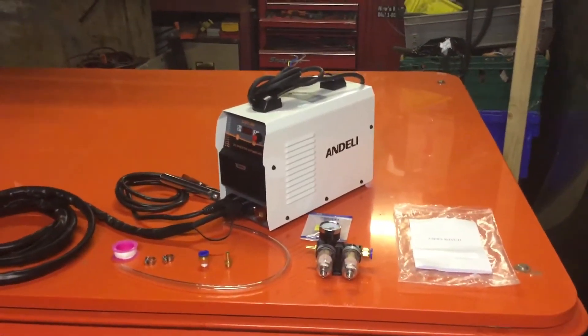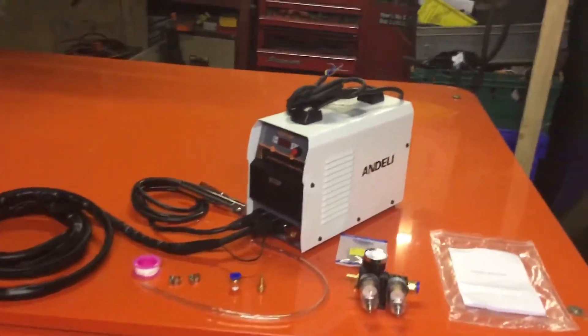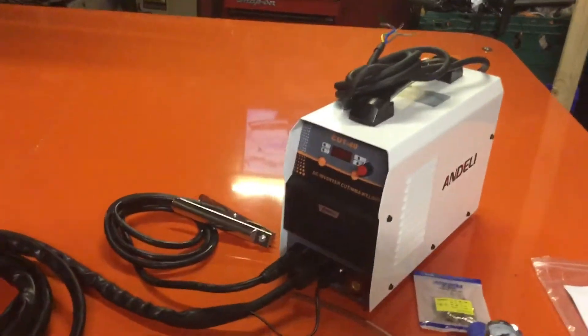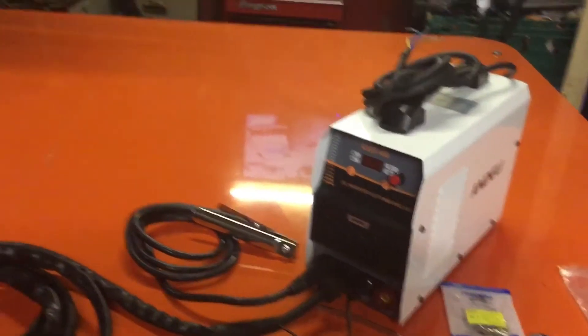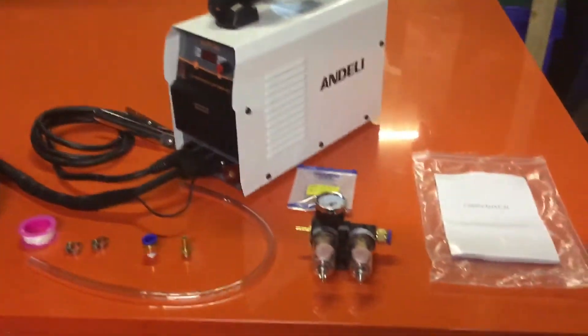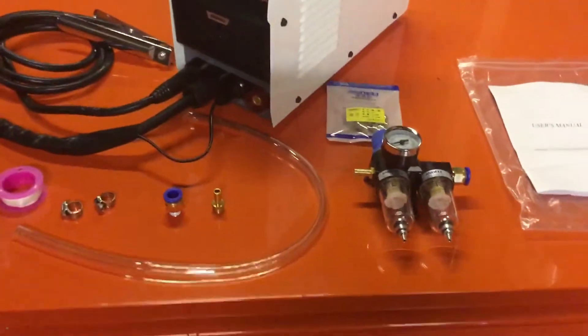But £260 I think it is off eBay. A little plasma cutter, well MMA welder it says, has a Cut 40, whatever that means. 40 amp I believe.